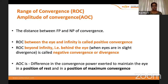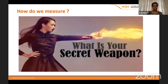The amplitude of convergence is the difference in converging power between the position of rest and the position of maximum convergence. After discussing all these parameters — which as a beginner one might find a little difficult — we look at how to measure them.